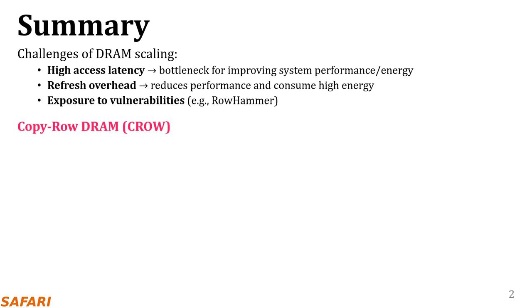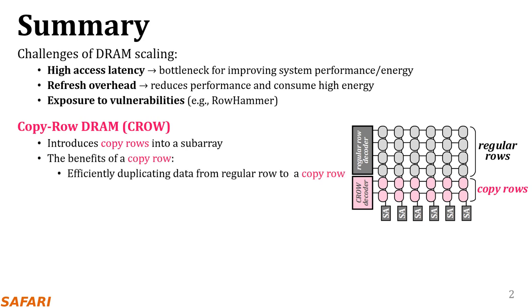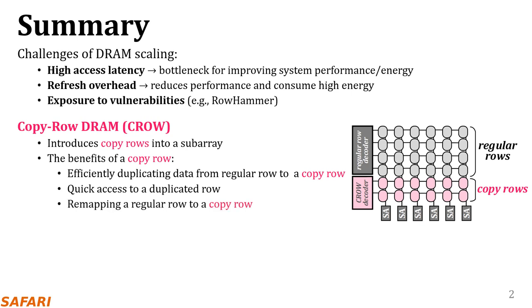To overcome the scaling challenges of DRAM, we develop a low-cost substrate which we call CopyRow DRAM or CROW. The key component of the CROW substrate is a copyrow, which CROW introduces to a subarray in addition to the conventional regular DRAM rows. A copyrow incurs a small area overhead and it has three benefits. First, data can be efficiently duplicated from a regular row into a copyrow. Second, data duplicated to a regular and copyrow can be accessed much faster than only a regular row. Third, a regular row can be remapped to a copyrow.